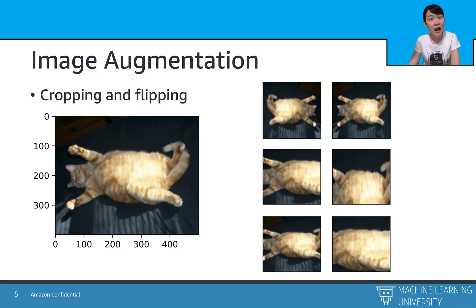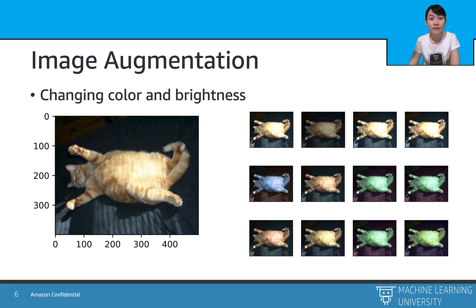Here are some samples of image augmentation. For the original image on the left-hand side, we can crop the image or flip it horizontally or vertically. Besides, we can change the hue — which is the color — and also the brightness of the given image. For example, we can get a green or blue cat, even though it is rarely seen in practice.